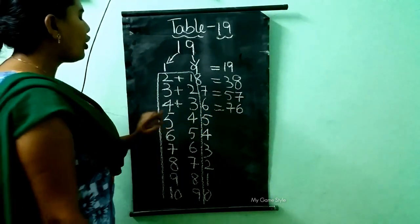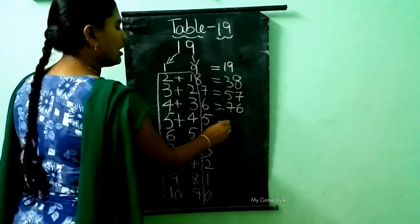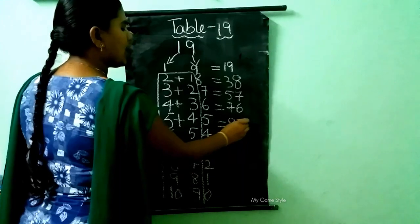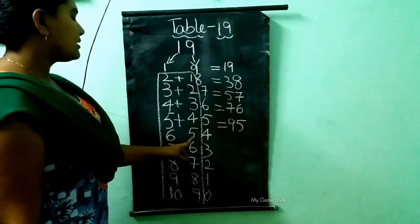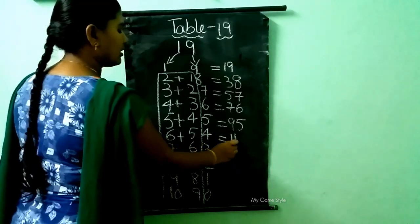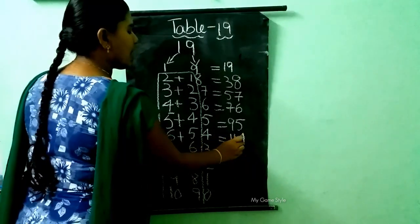Then 5 plus 4. How much, children? 9. Then 5, as it is. Next 6, 6 plus 5. How much, children? 11. Here 4, as it is.